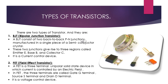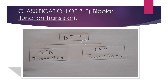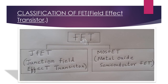There are two types of transistors: BJT, that is Bipolar Junction Transistor, and FET, Field Effect Transistor. A BJT consists of two back-to-back PN junctions manufactured in a single piece of semiconductor crystal, giving rise to three regions called emitter, base, and collector. It is a current-controlled device. A FET is a three-terminal unipolar solid-state device in which current is controlled by an electric field, with terminals called gate, source, and drain — it is a voltage-controlled device. A BJT is further classified into NPN and PNP transistors, while FET is classified into JFET and MOSFET. In this video, I will explain only about BJT.